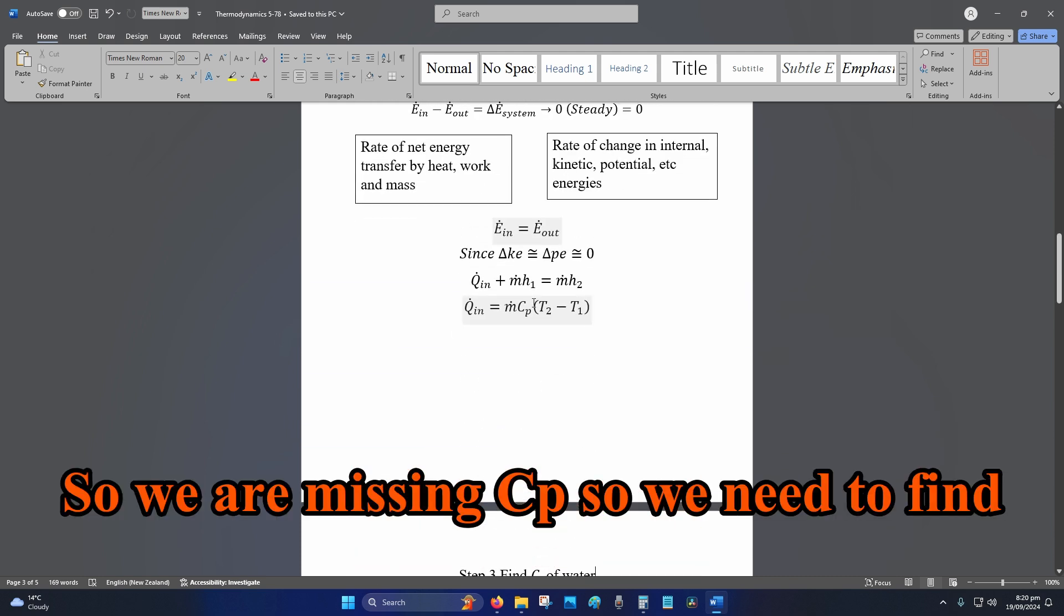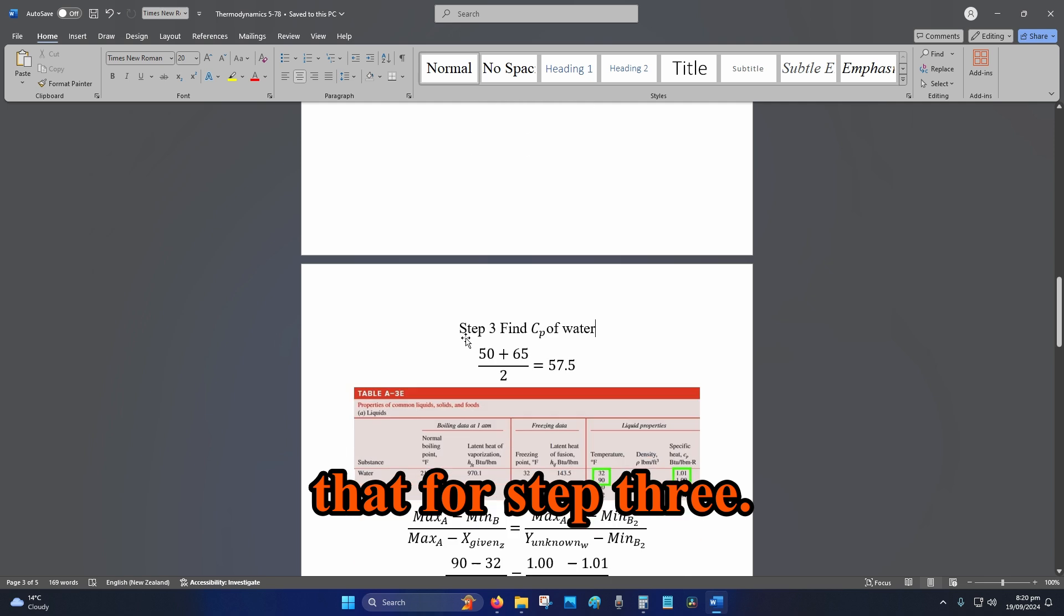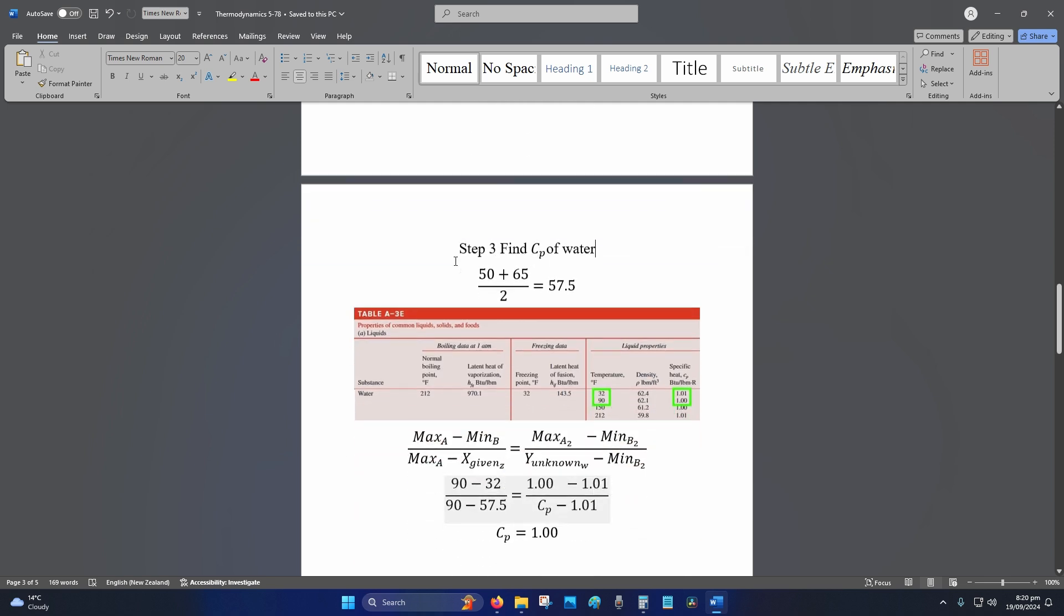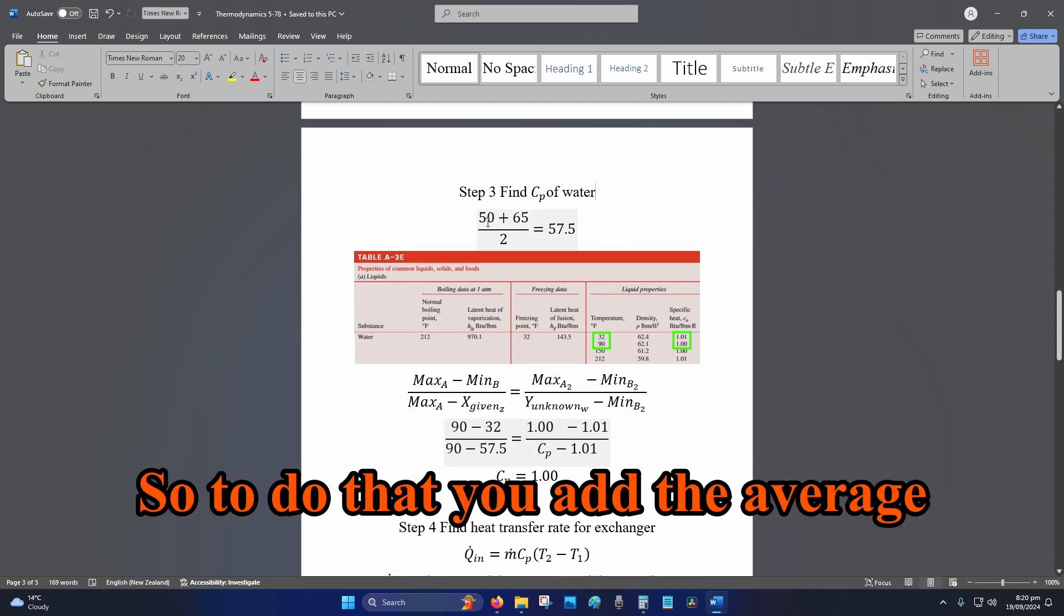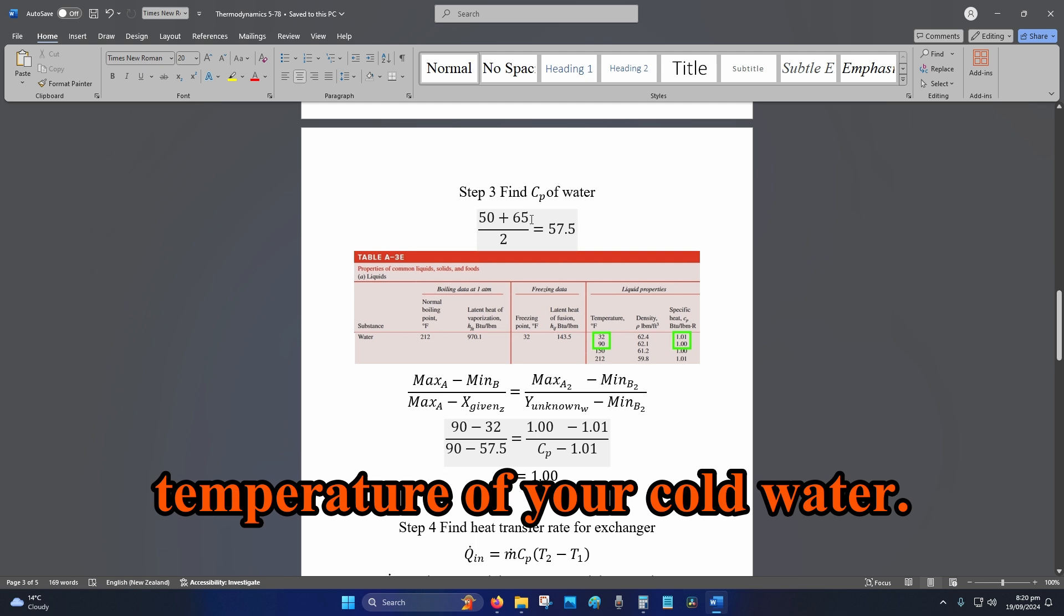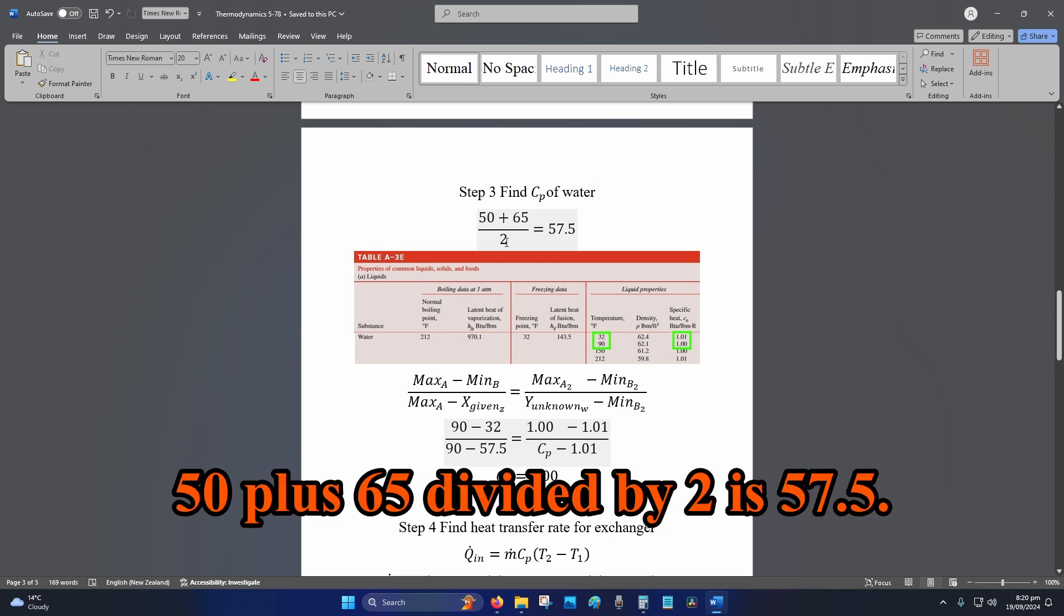All right, so we are missing Cp so we need to find that for step three. So to do that you add the average temperature of your cold water. 50 plus 65 divided by 2 is 57.5.